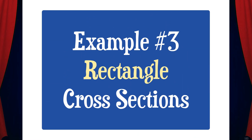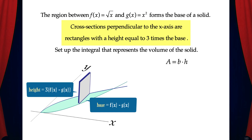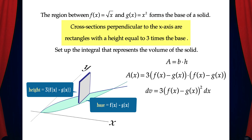Let's do one more example: rectangle cross-sections. We'll use the same region between √x and x², but now cross-sections perpendicular to the x-axis are rectangles with a height equal to three times the base. The area of a rectangle is base times height, and the base is f(x) − g(x), so the height is 3(f(x) − g(x)). That means A(x) = 3(f(x) − g(x))², and the volume of the solid is 3 times the integral from 0 to 1 of (f(x) − g(x))² dx.